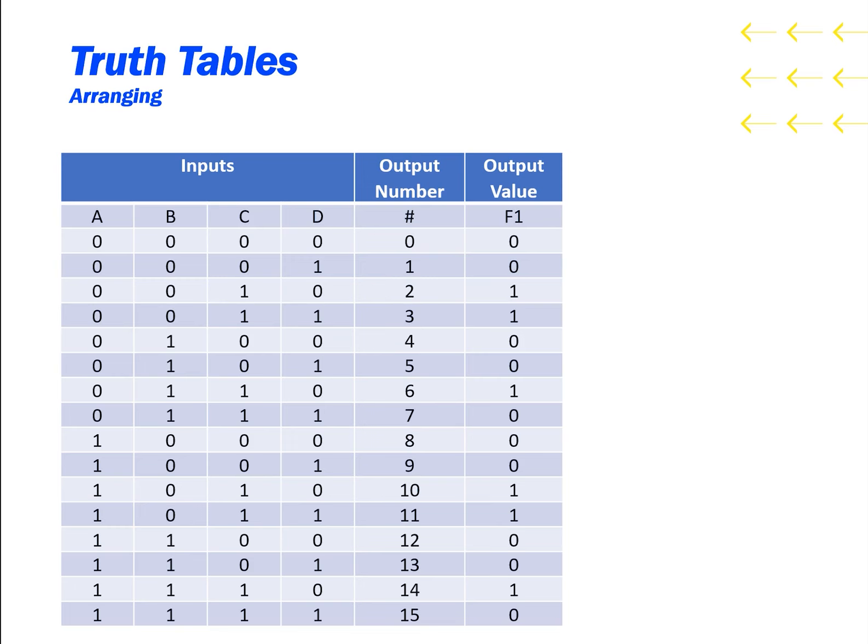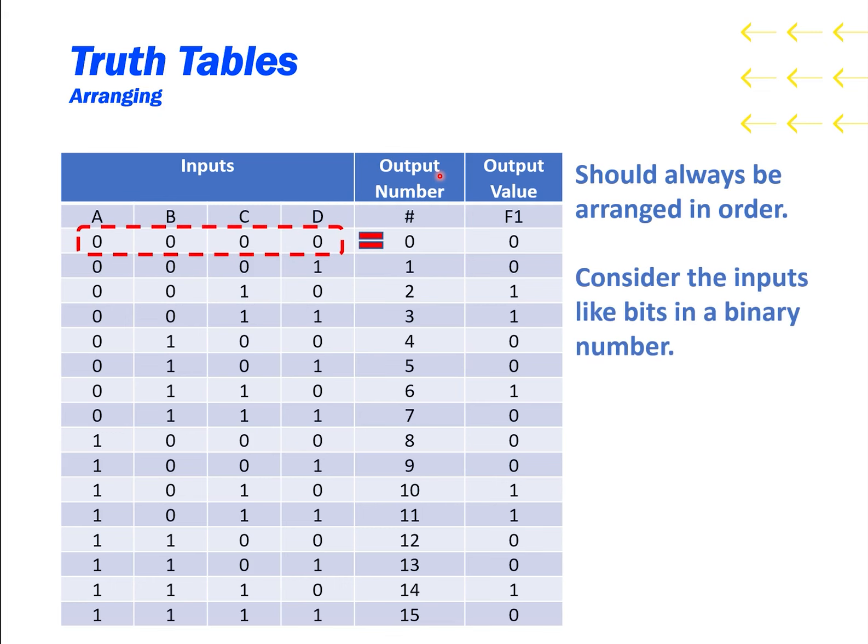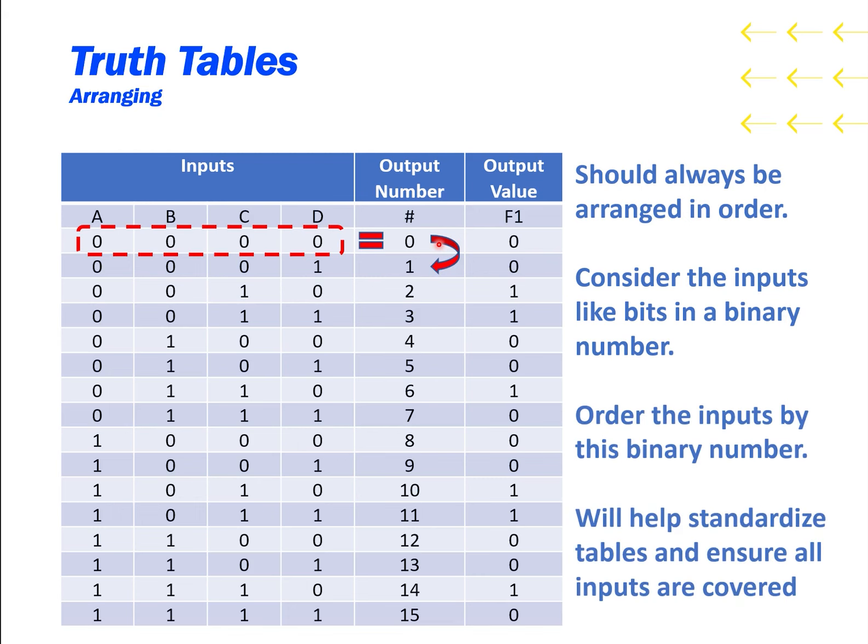I'm sure everyone's seen truth tables, but what you might not have seen is this middle column with the output number. A truth table should always be arranged in order. If you consider the input variables like bits in a binary number, you can get this output number. You can order the inputs by this binary number, and this will standardize the truth table and ensure that all inputs are covered.